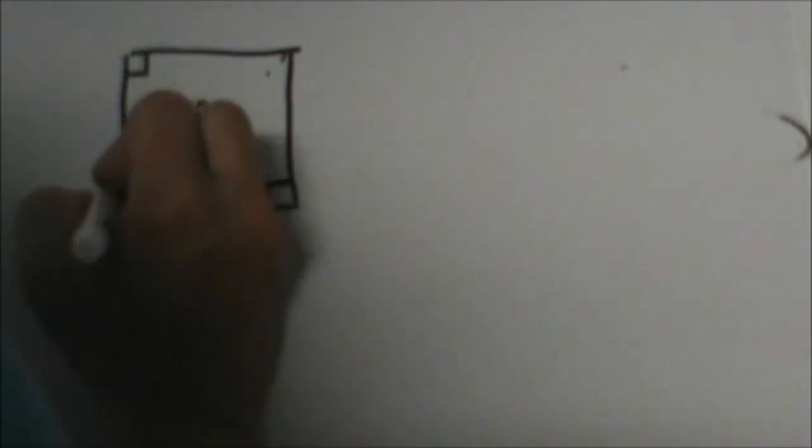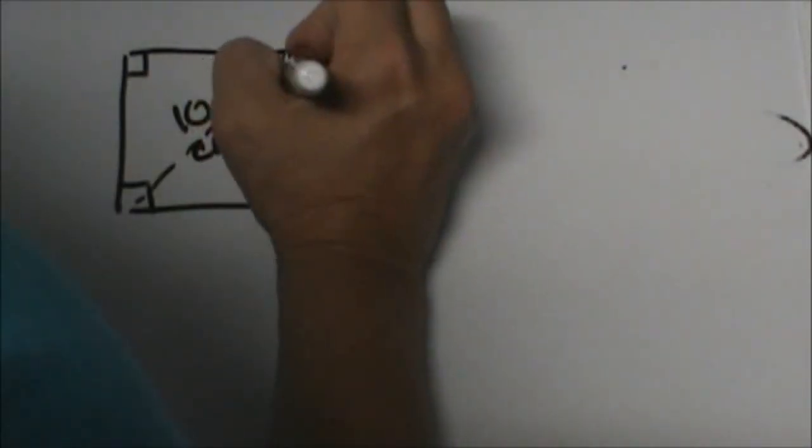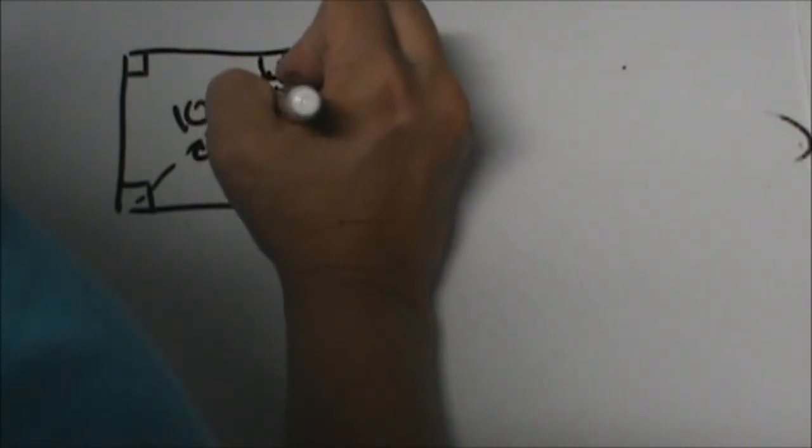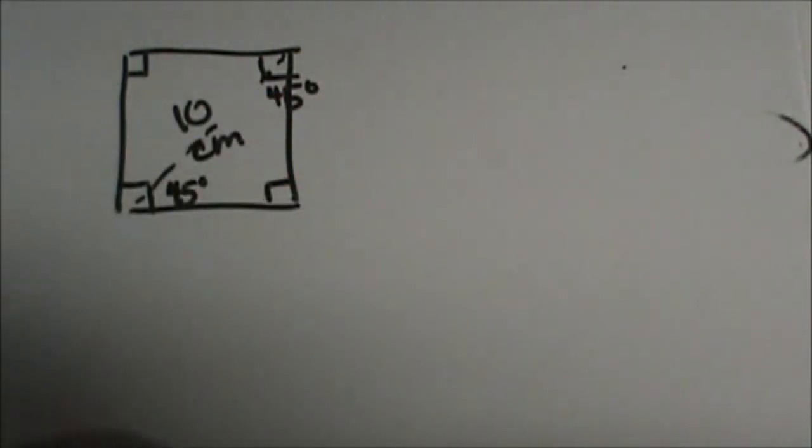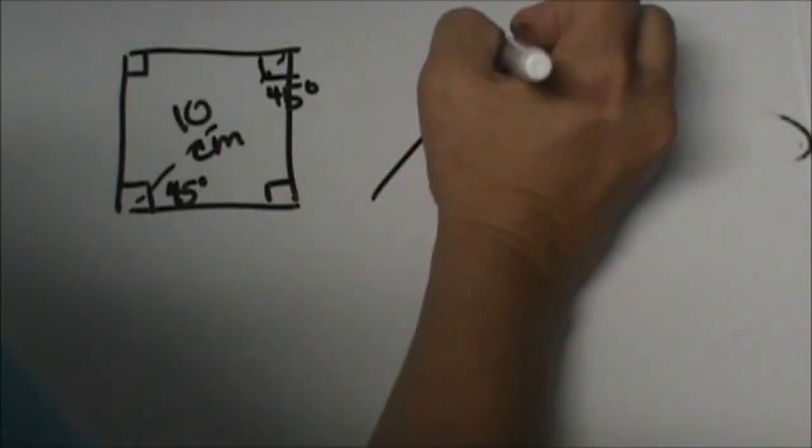Let's mark our angles. We have 90 degree angles because it's a square. Then we know the diagonal bisects the angle so it's a 45-45-90 right triangle. Let's pull that triangle out.